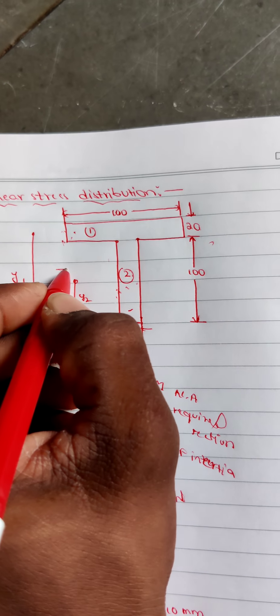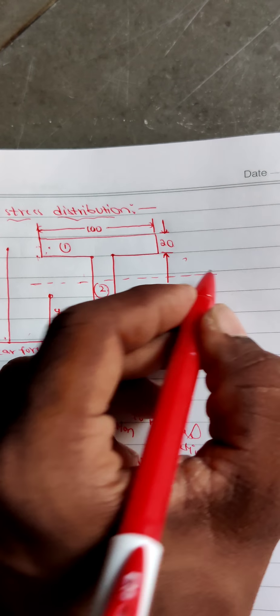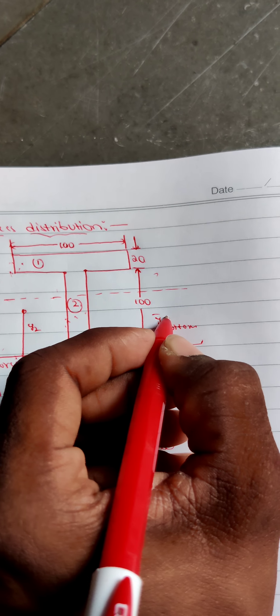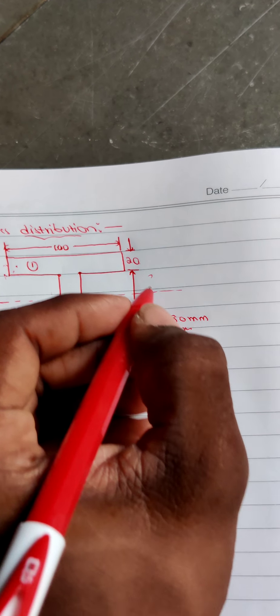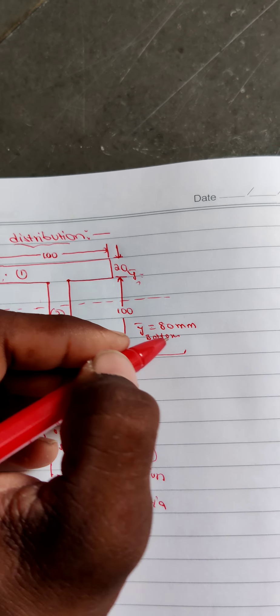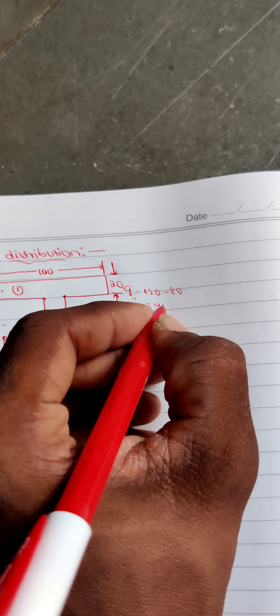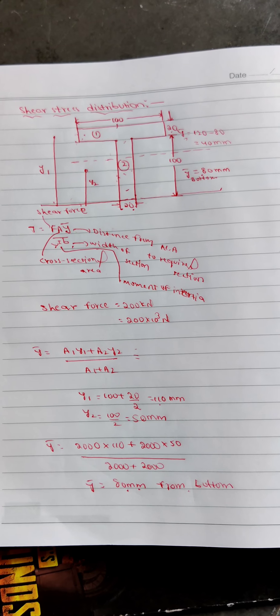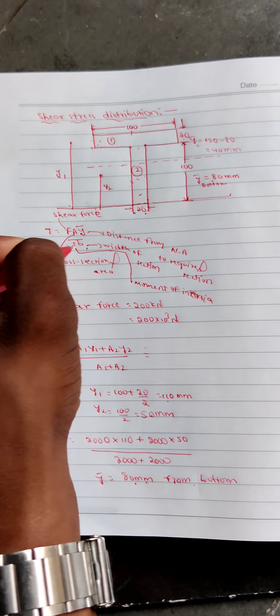Assuming a neutral axis line, Y-bar from the bottom is 80 mm. Y-bar from the top is the overall depth minus Y-bar from the bottom: 120 minus 80, which is 40 mm. Now we calculate the moment of inertia for the entire T-section. There are 2 sections, so the overall moment of inertia equals I for section 1 plus I for section 2.